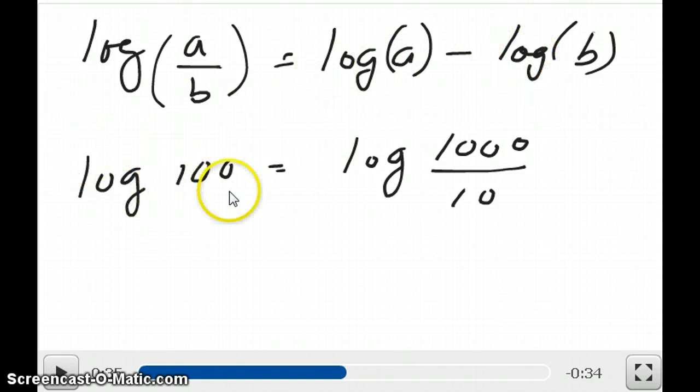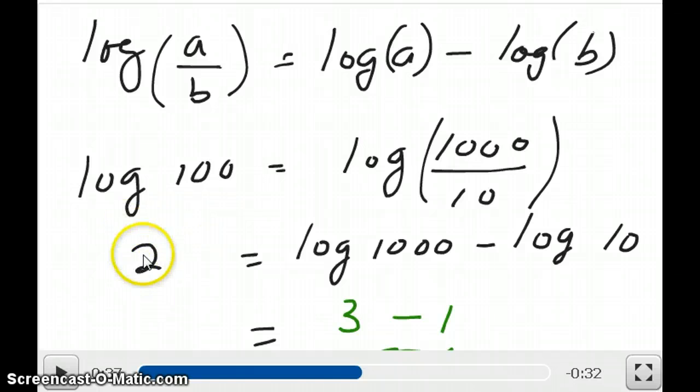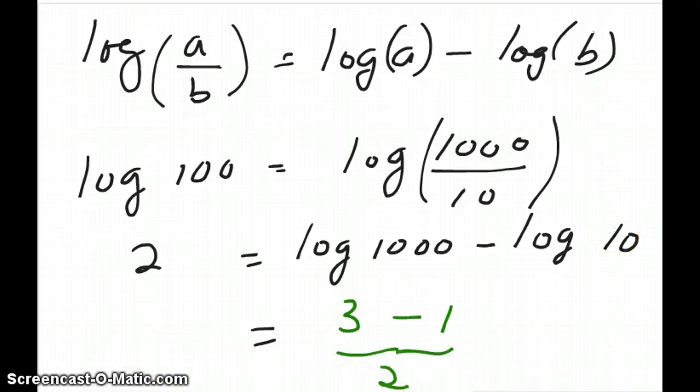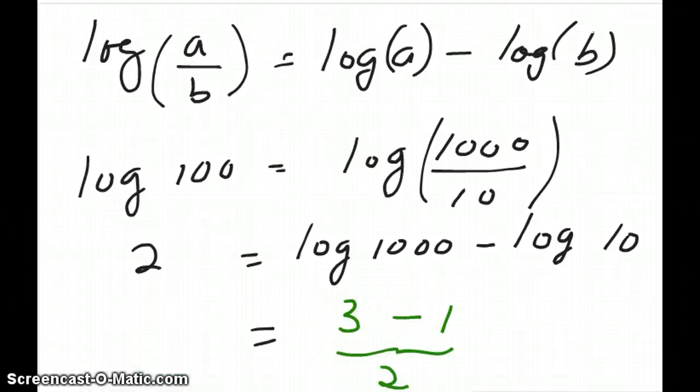For example, the log of 100 is equal to the log of 1000 divided by 10. Now, since we know that the log of 100 is equal to 2, our answer on this side also has to equal 2. Now, if you look carefully, the log of 1000, of course, is 3 and the log of 10 is 1. So when we write it as the log of 1000 divided by 10, it's the same as writing log of 1000 minus the log of 10, which is 3 minus 1. And, of course, that's also 2.